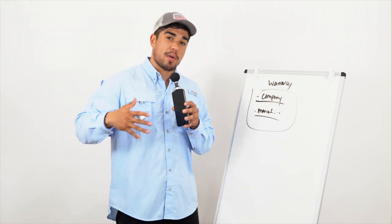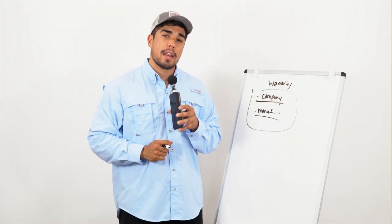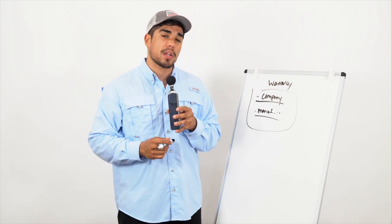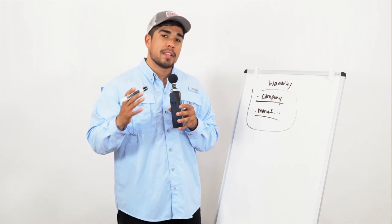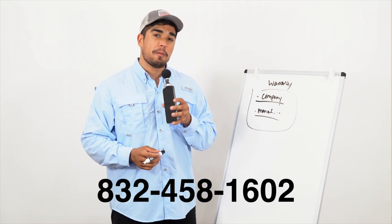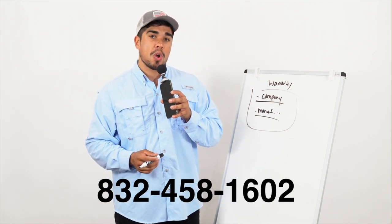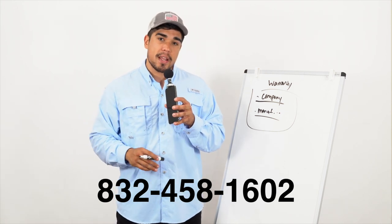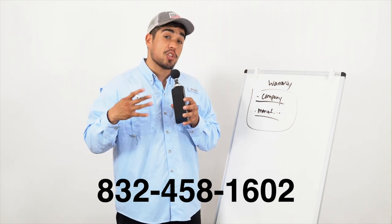If you're in the Houston area and you're looking for a new flat roof or you have more questions when it comes down to TPO or any single ply membrane roof, give us a call. Our number is 832-458-1602. We're a local company here in Spring, Texas but we do work all throughout Houston and we've done many jobs for TPO roofs.